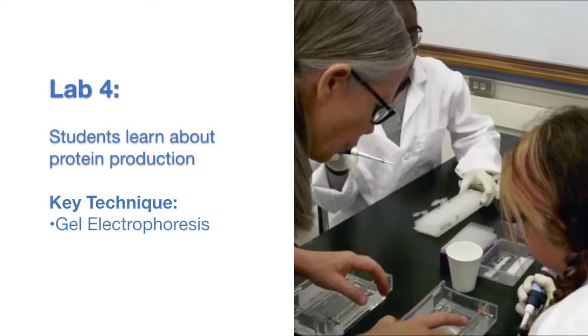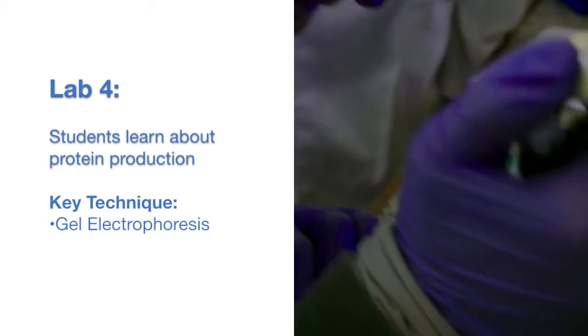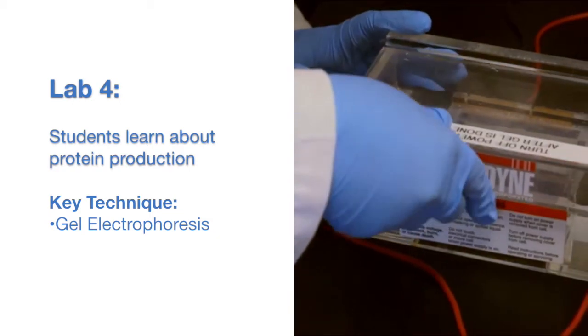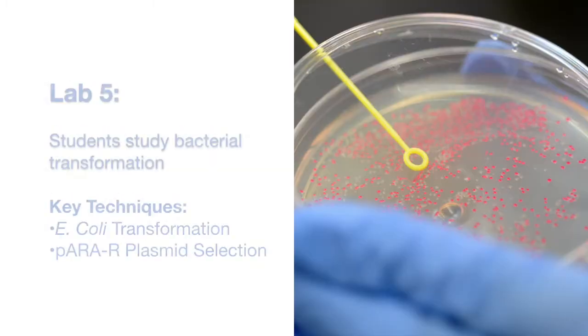In lab four, students learn about the necessary ingredients for protein production. They use gel electrophoresis to determine whether they have, in fact, created the para-R plasmid that contains all of the crucial components.